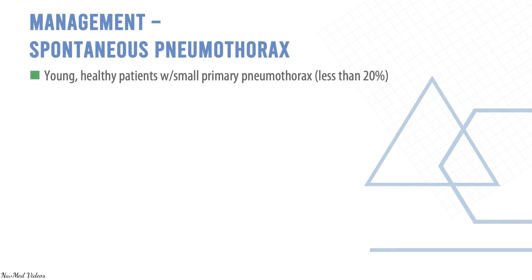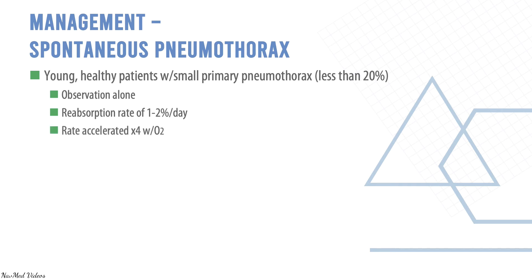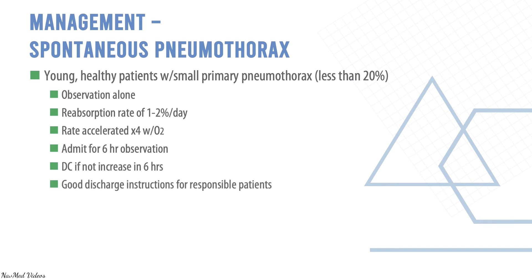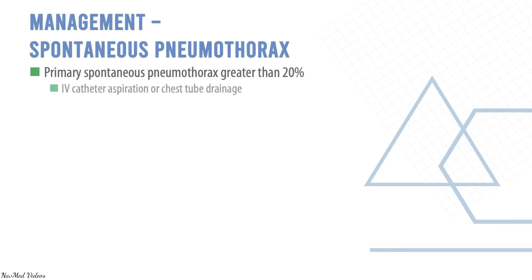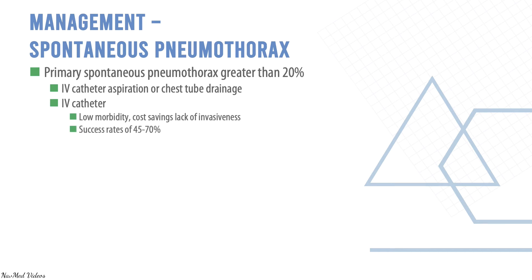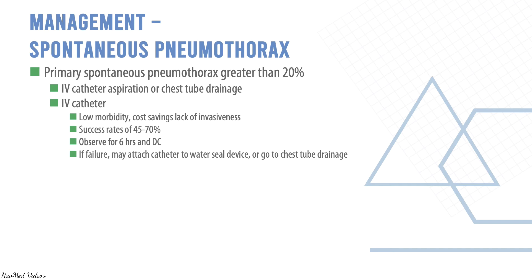In young healthy patients with a small primary pneumothorax (less than 20%), observation is an option. Reabsorption rate is 1–2% per day, accelerated with oxygen. Admit for 6 hours observation; discharge if it doesn't increase, with good discharge instructions. For more than 20%, IV catheter aspiration or chest tube drainage is indicated. IV catheter offers low cost and lack of invasiveness, with a success rate up to 70%. Observe for 6 hours; if there's failure, attach catheter to a water seal device.